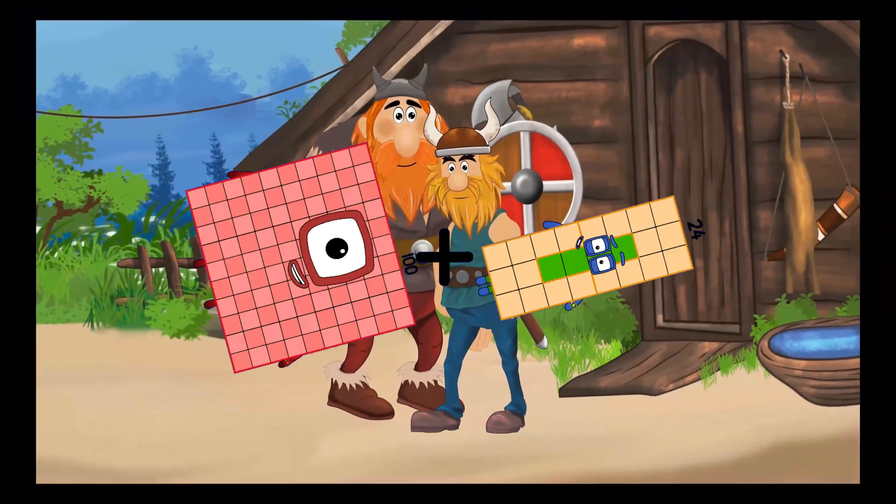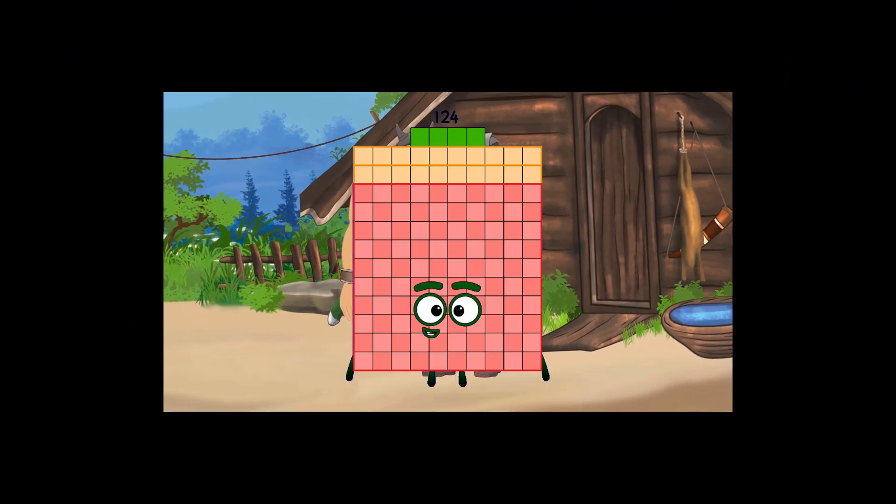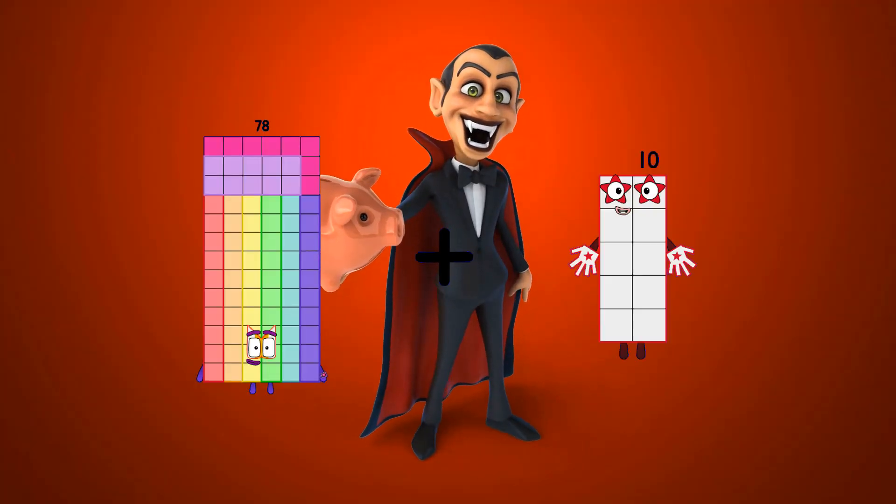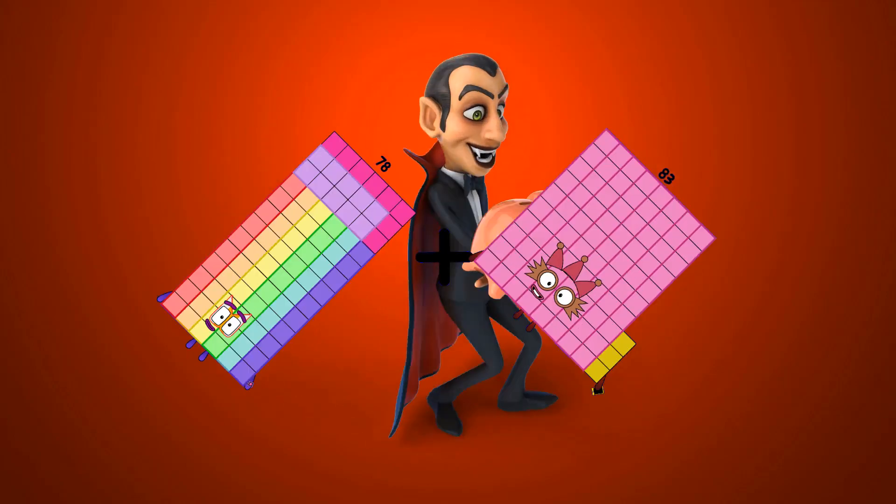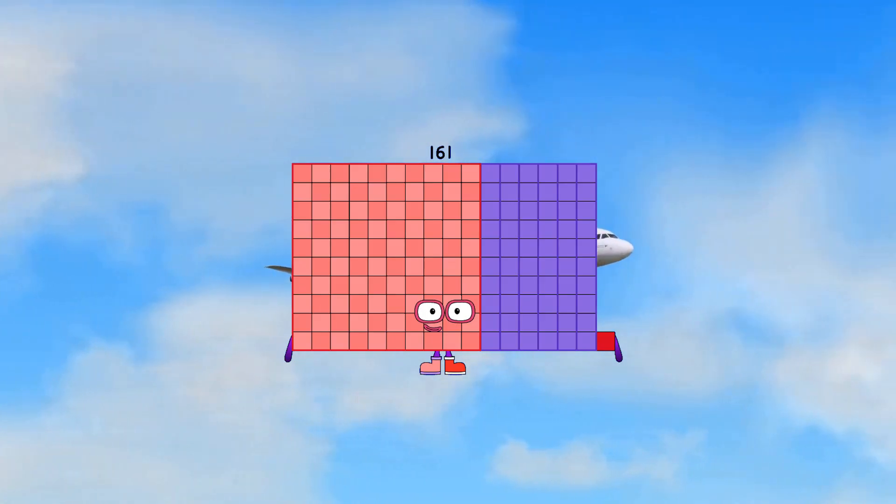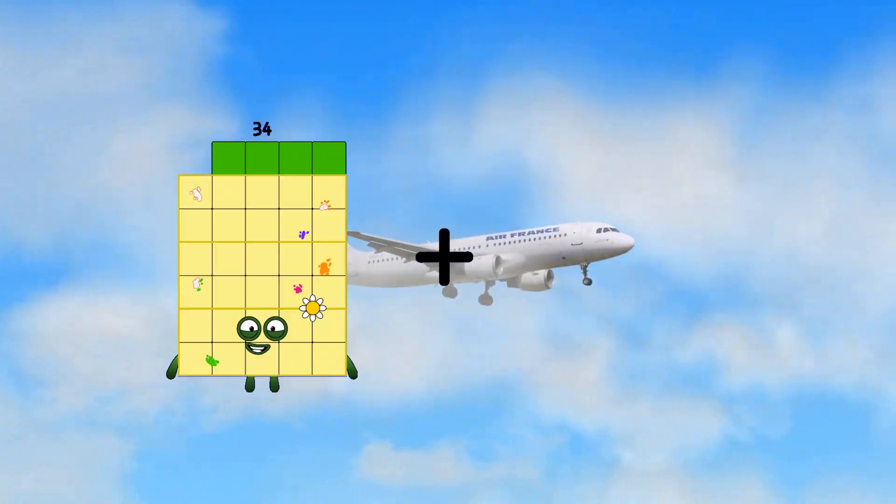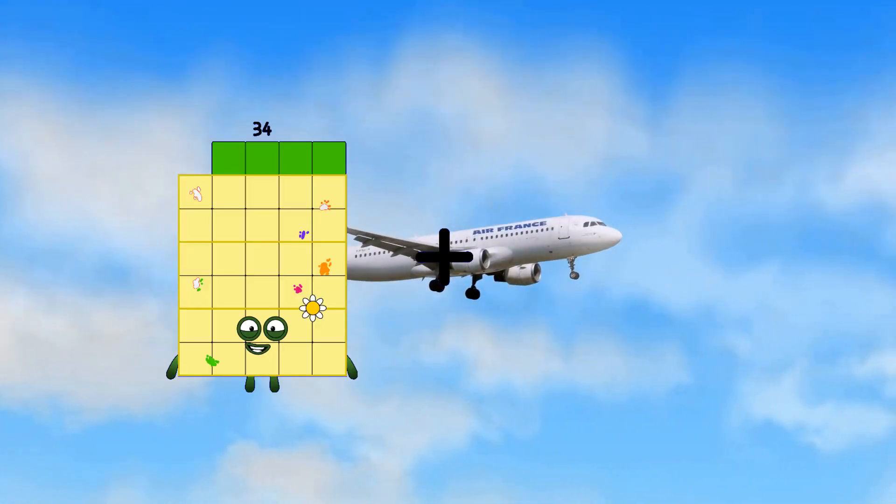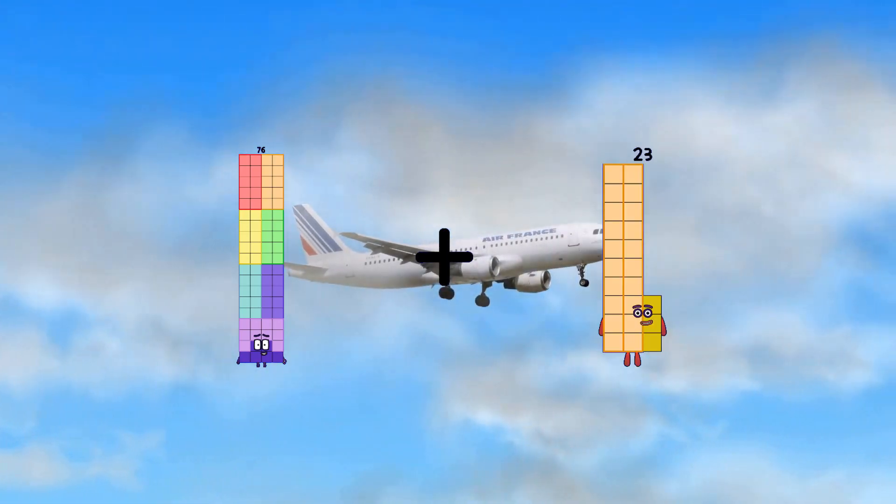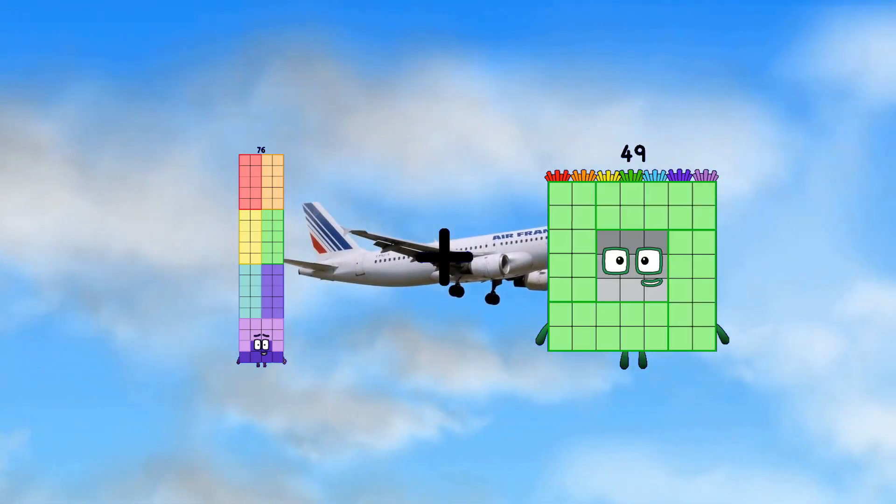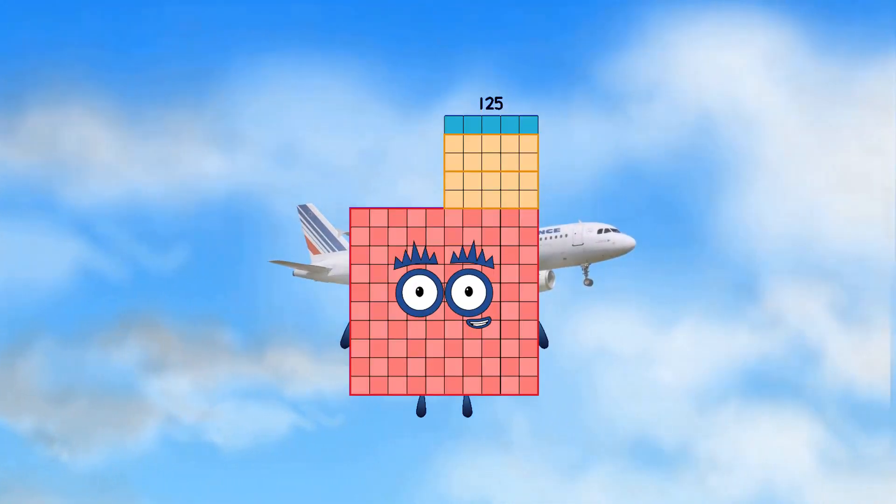70 plus 18 equals 88, 60 plus 80 equals 112, 71 plus 49 equals 125.